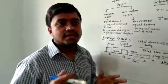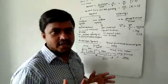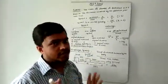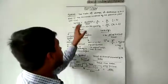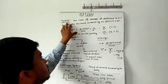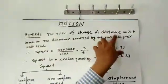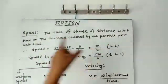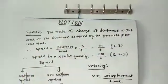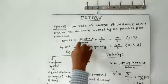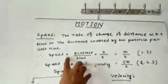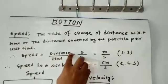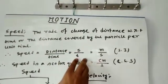Speed means what? Speed is a quantity that tells us how fast the body is moving. The definition of speed is the rate of change of distance with respect to time, or the distance covered by the particle per unit time. The mathematical form is: speed equals distance divided by time, where the symbol of distance is s and time is t.